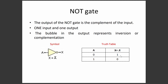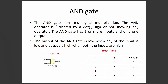In the NOT gate truth table: if A is 0, the output A-bar is 1; if A is 1, the output A-bar is 0. The complement of the input is the output. The bubble in the symbol represents inversion or complementation. The NOT gate has a single input and single output.